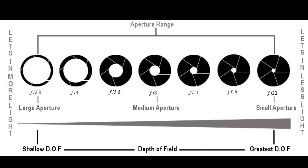Telescopes that have a focal ratio between f5 to about f7 or f8 are considered to be medium speed telescopes. And finally, telescopes that have a focal ratio of f9 to f10 or larger are considered to be slow telescopes. These telescopes have a long focal length which gives them a narrow field of view, so you'll have to take a long enough exposure to collect as much light as possible.